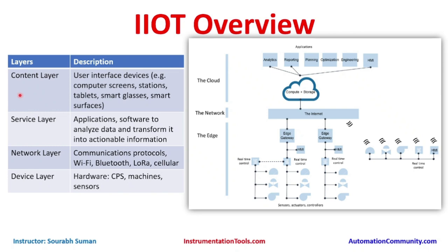There is also a layer-based model. The device layer contains CPS machines and hardware. Then we have the network layer, which could include Bluetooth, LoRa, cellular, or Wi-Fi communication — this is where all communications from the devices are established.